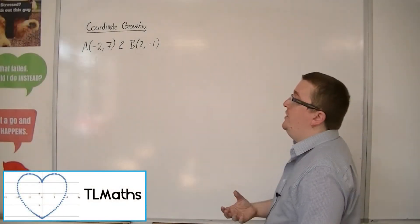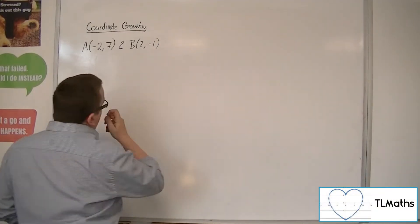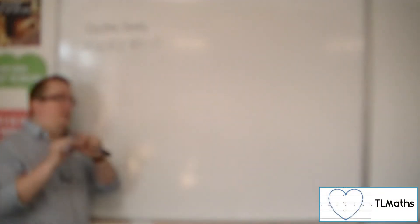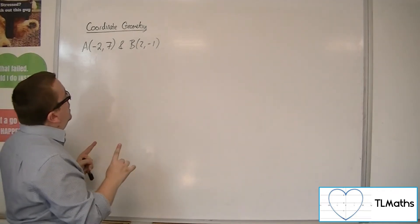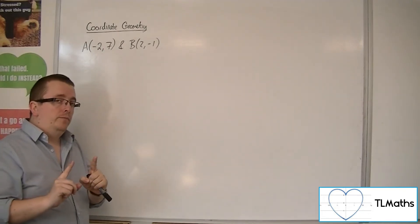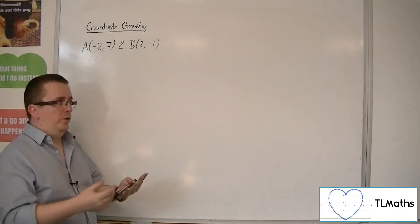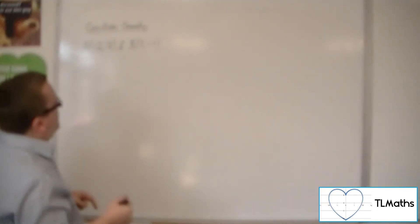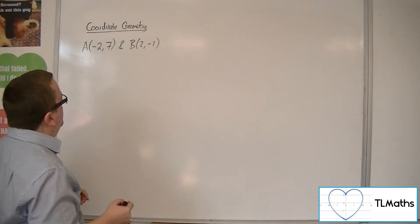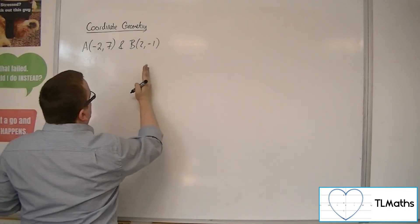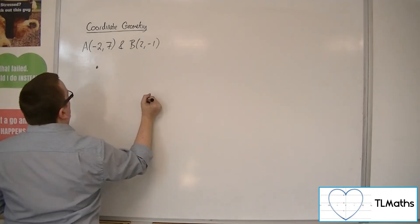So let's say I want to find the gradient of the chord that joins these two coordinates. What I mean by that is I'm going to draw a line that joins these two points together, and I want to know what the gradient of that line is — that's what I mean by joining two coordinates with a chord. So A is (-2, 7) and B is (2, -1). B is going to be further to the right and further down, so A is going to be up here and B is going to be somewhere down here.